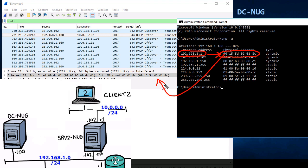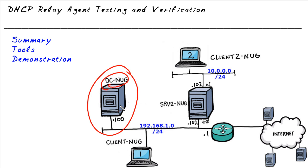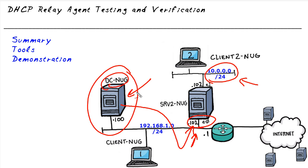So to solve this, we need to train DC-NUG — either through a dynamic routing protocol or a static route — on how to reach the 10.0.0 network. Looking at our topology, the right next hop for DC-NUG to reach the 10.0.0 network is going to be 192.168.1.102, which is Ethernet 0 on Server 2. If DC-NUG knows to use .102 as the next hop, it will also use the correct layer 2 address associated with E0 on Server 2 to forward that packet.